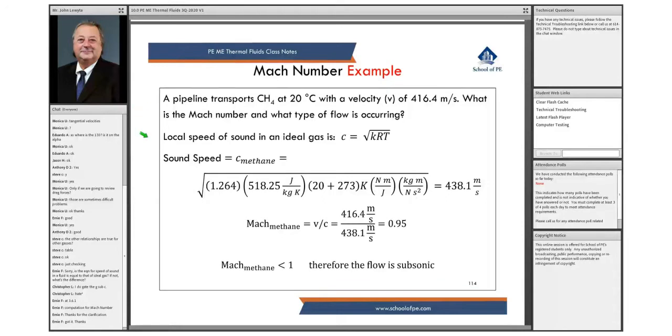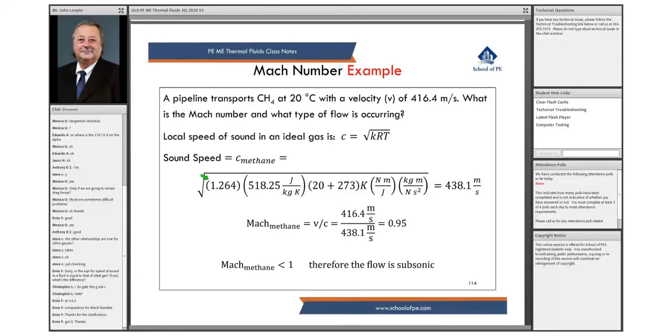Again, local speed of sound for an ideal gas. What you have here is your ratio of specific heats for methane. It's all tabulated in your handbook. Here's your R value, 518 joules per kilogram per degree Kelvin, off your table.